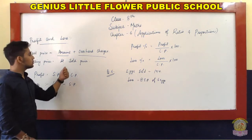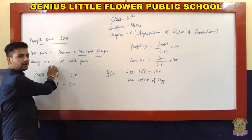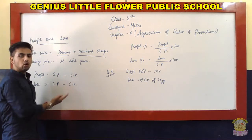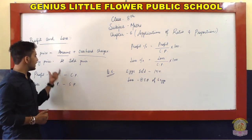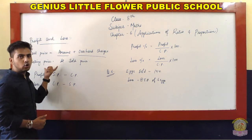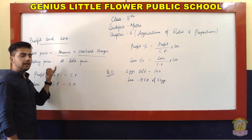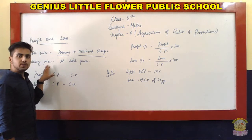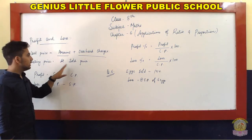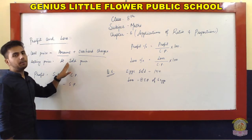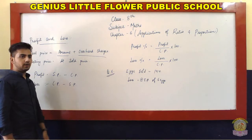Now moving to selling price. Selling price is the price at which we sell the product. If we bought it at 100 and sold it at 120, the selling price is 120 and cost price is 100. If we purchased at 100 and sold at 80, cost price is 100 and selling price is 80. Generally, the price at which we sell an item is called the selling price.